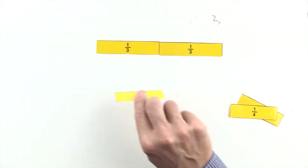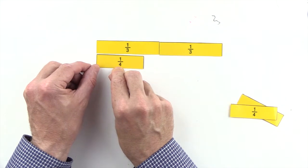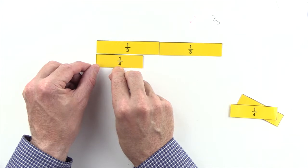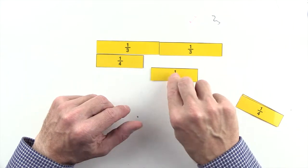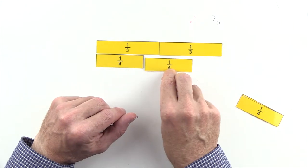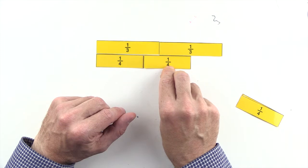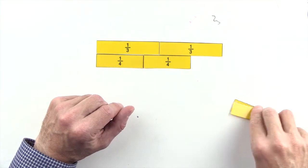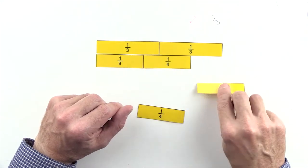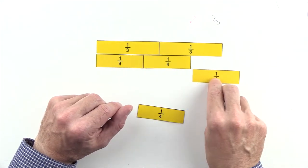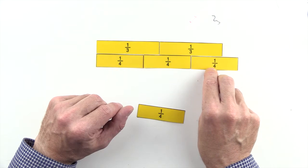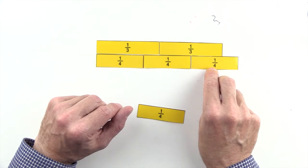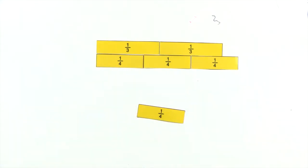1 quarter and 2 quarters are less than 2 thirds, and 3 quarters are greater than 2 thirds. So we can't use quarters to make an equivalent fraction to 2 thirds.